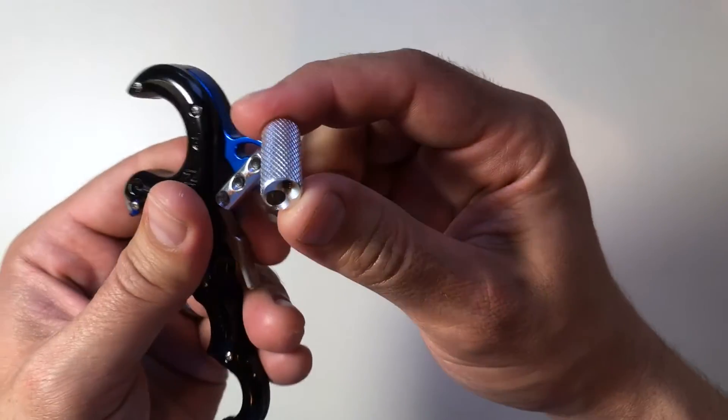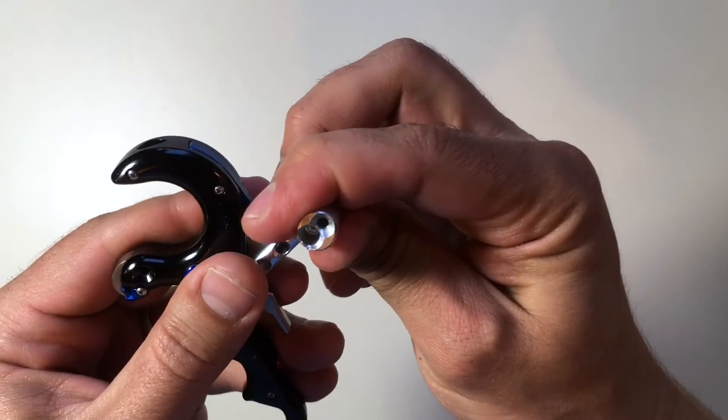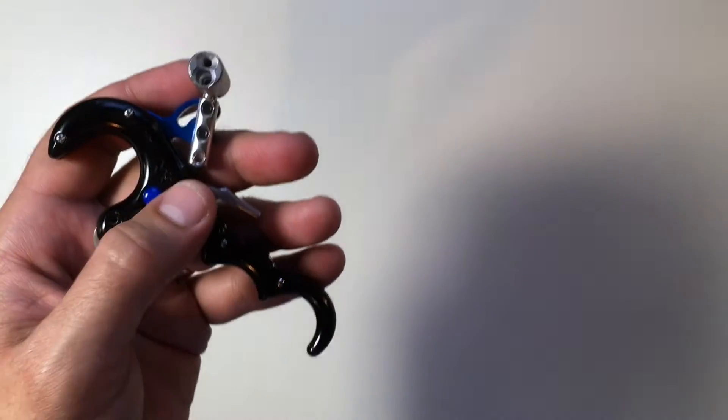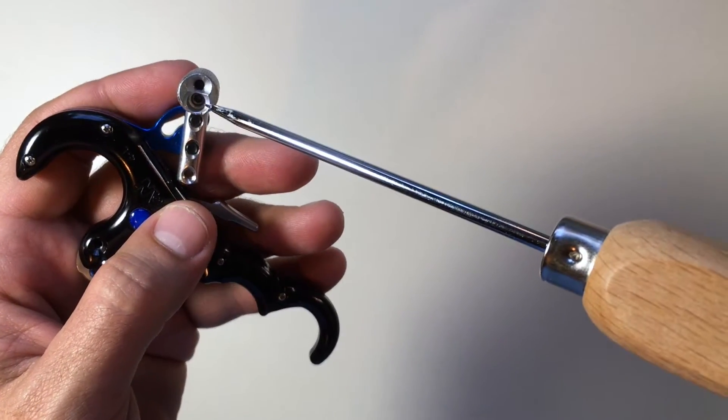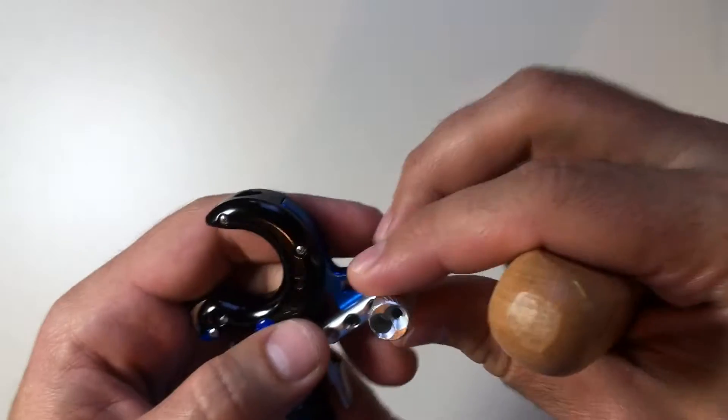You can also change the angle of the knurled extension. There's a tiny allen head inside of it, and there's a rubber gasket in there that applies tension.